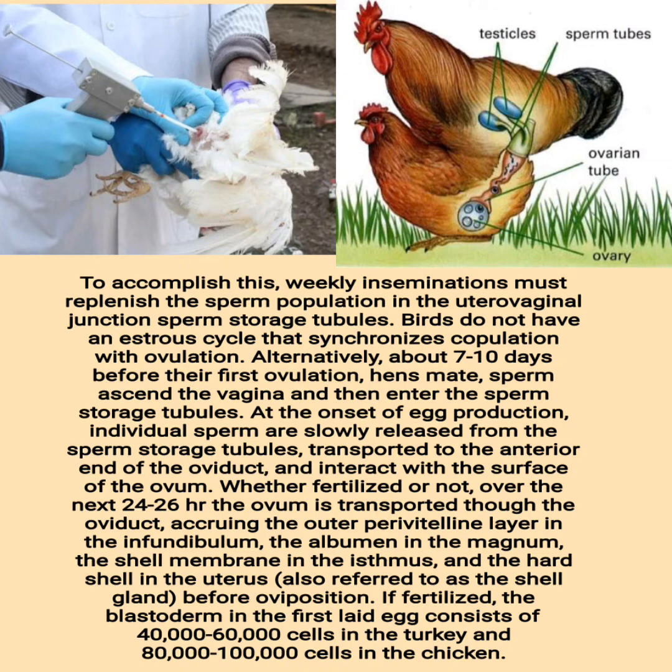Whether fertilized or not, over the next 24 to 26 hours the ovum is transported through the oviduct, accruing the outer perivitelline layer in the infundibulum, the albumen in the magnum, the shell membrane in the isthmus, and the hard shell in the uterus, also referred to as the shell gland, before oviposition. If fertilized, the blastoderm in the first laid egg consists of 40,000 to 60,000 cells in the turkey and 80,000 to 100,000 cells in the chicken.